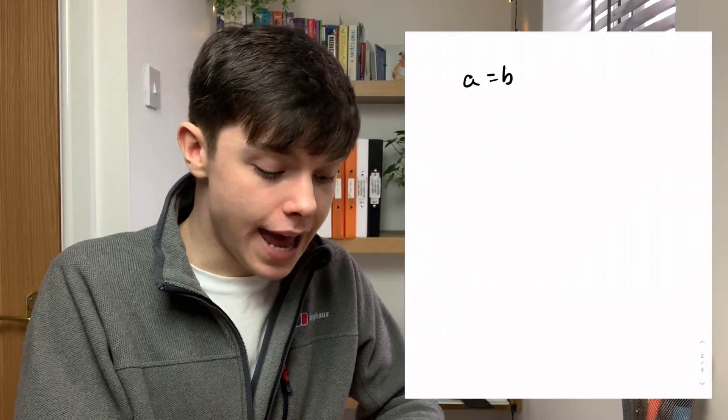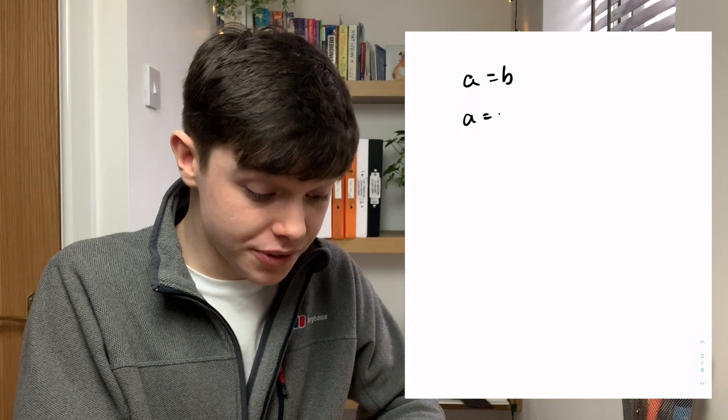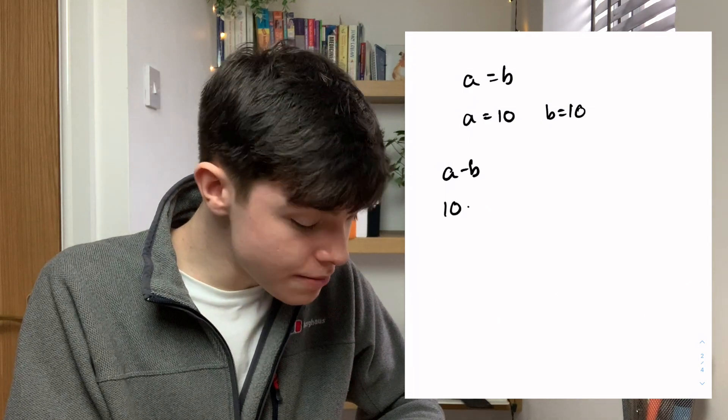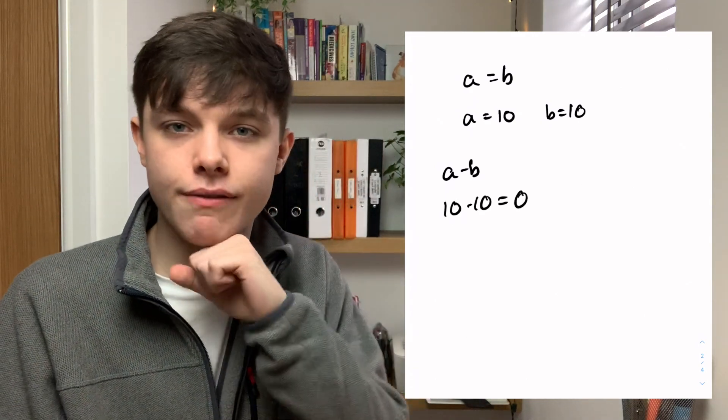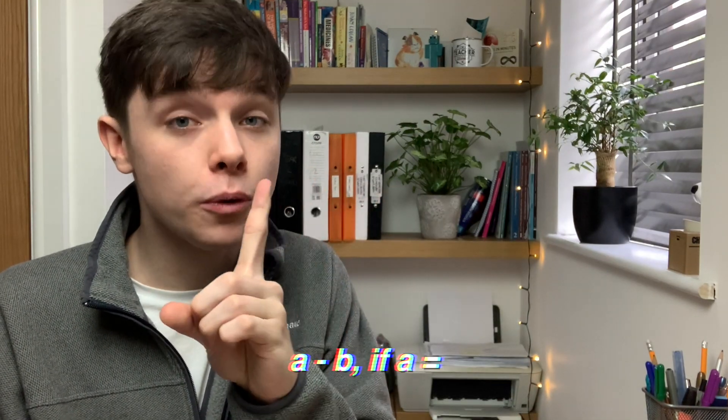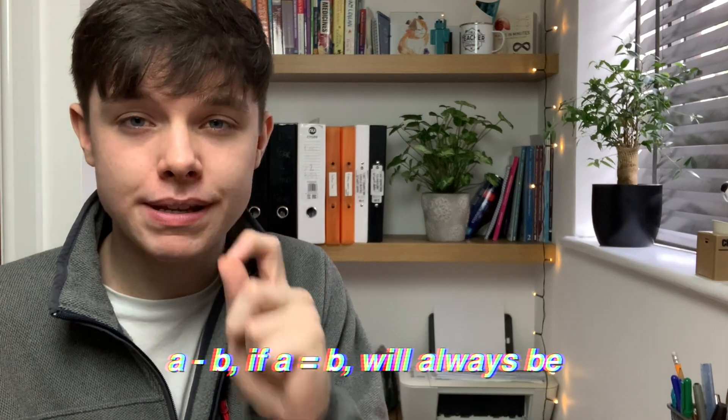Let's try another number. Let's say a equals b again and we've got a equals 10, so therefore b equals 10. The value of (a - b) will be 10 - 10 which will be 0. You can try so many more numbers for a and b but (a - b), if a equals b, will always be 0.